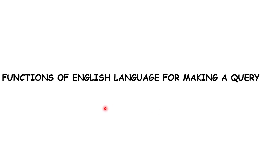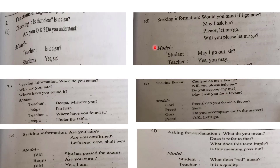The second type are the functions of English language which are used to make a query or a question of some kind, like fulfilling one's curiosity. The first one is checking. To check something: Is that clear? Is it clear? Are you okay? Do you understand? Example: Teacher: Is it clear? Students: Yes, sir.